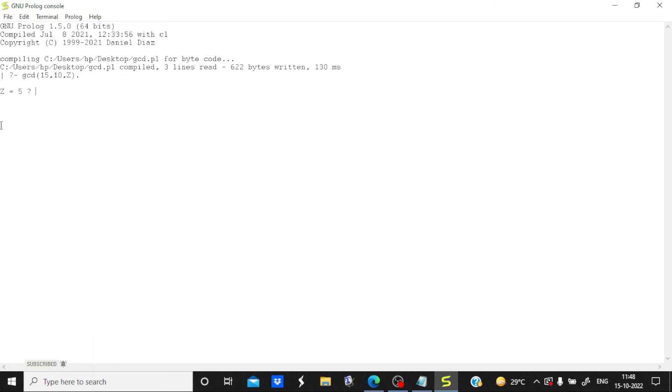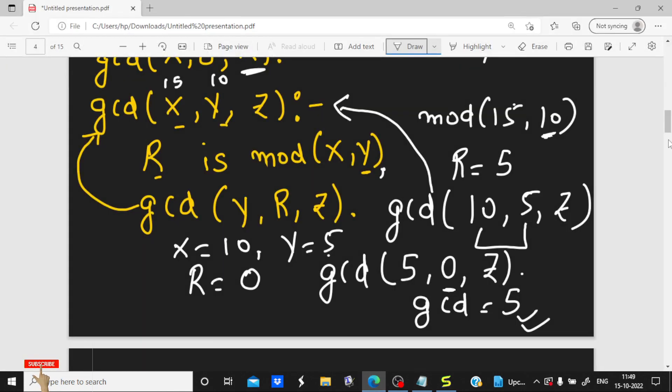Now considering a case where value of y is 0. So if I will take gcd of 15 comma 0 and storing it in R, then let's see what will happen. So its gcd is 15. So in this way this program is working. I hope this all is clear to you.